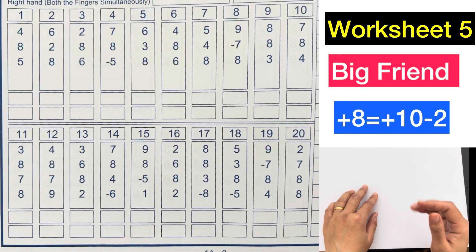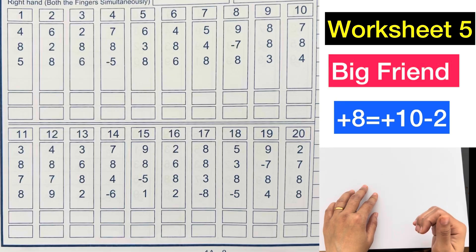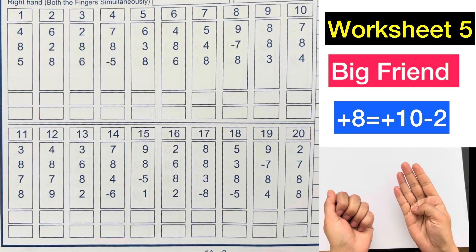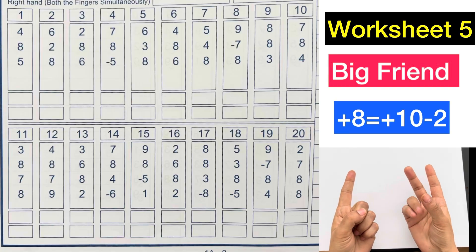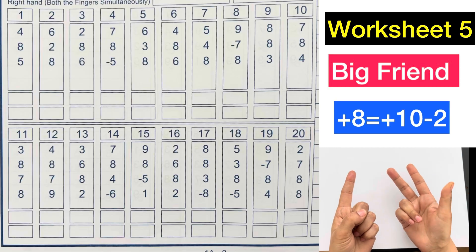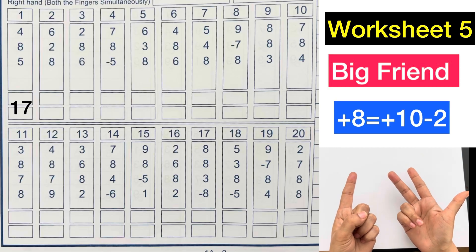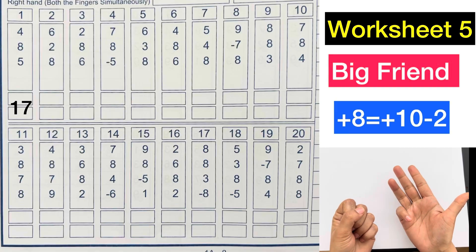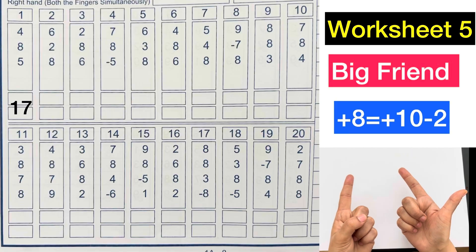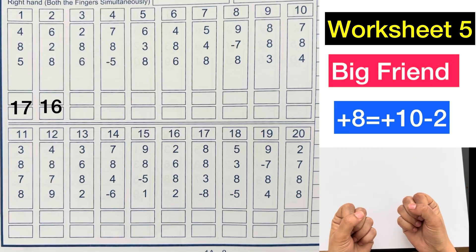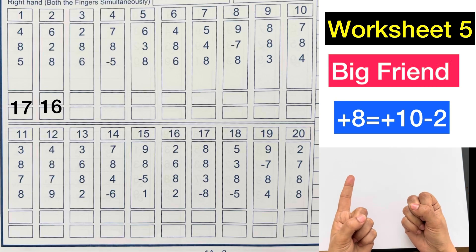Backseat No. 5. Big Friend Formula: plus 8 equals plus 10 minus 2. First question: 4 plus 8 plus 10 minus 2 plus 5, answer is 17. 6 plus 2 plus 8 plus 10 minus 2, answer is 16. 2 plus 8 plus 10 minus 2 plus 6, answer is 16.